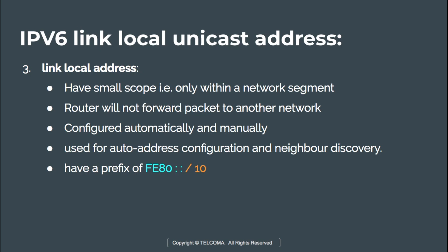The next address is the IPv6 link local unicast address. Link local addresses have a small scope — they are assigned within a very small network and only apply within a network segment. Routers will not forward packets to another network. Like unique local addresses, link local addresses are not routable outside the network. They can be configured automatically or manually using DHCPv6, and are used for auto address configuration and neighbor discovery.